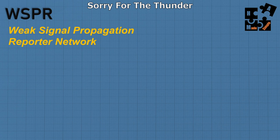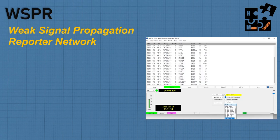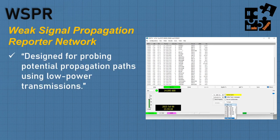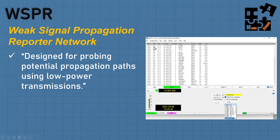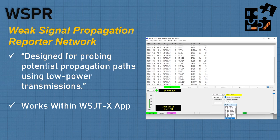Whisper stands for Weak Signal Propagation Reporter Network, and it's all off of WSJT-X. It's designed for probing potential propagation paths using low-power transmissions — a lot of people send out milliwatts. So when you see a signal-to-noise ratio of minus 27 dB, that number doesn't have any reference until you know the power behind it. If they used a milliwatt versus 5 watts and you're getting minus 27, what would it be at 5 or 10 watts? The SNR must be read relative to the power shown.